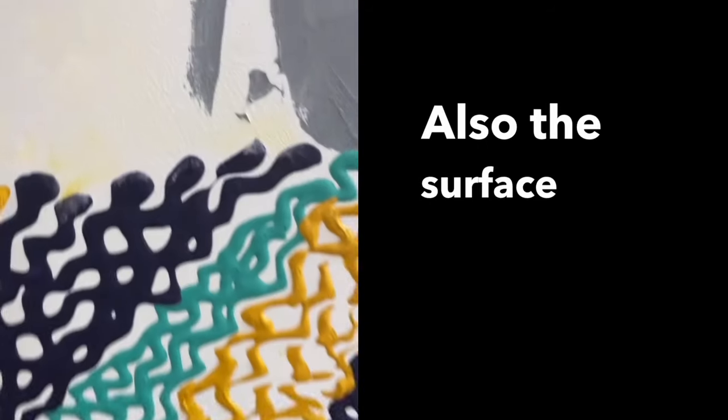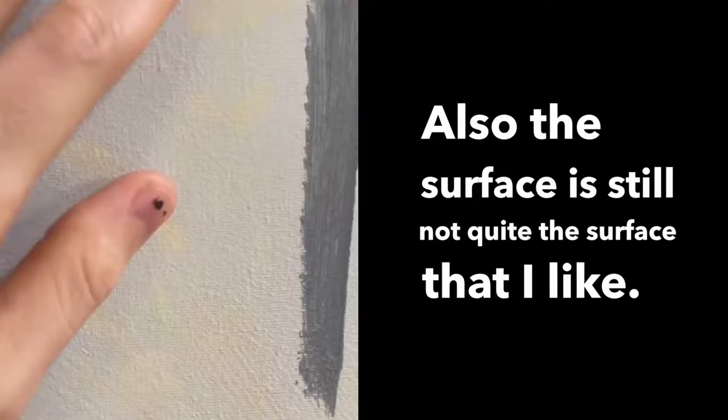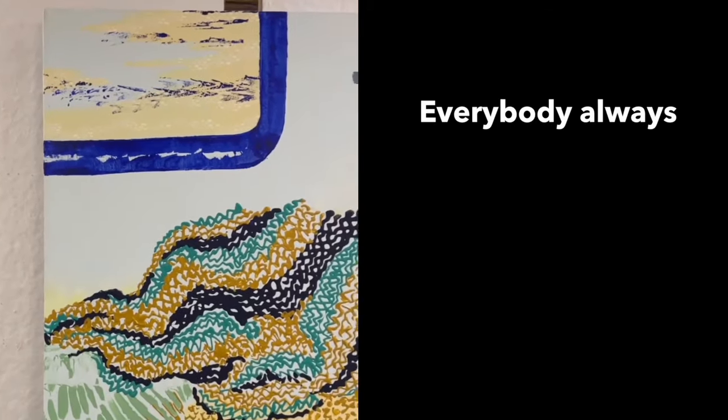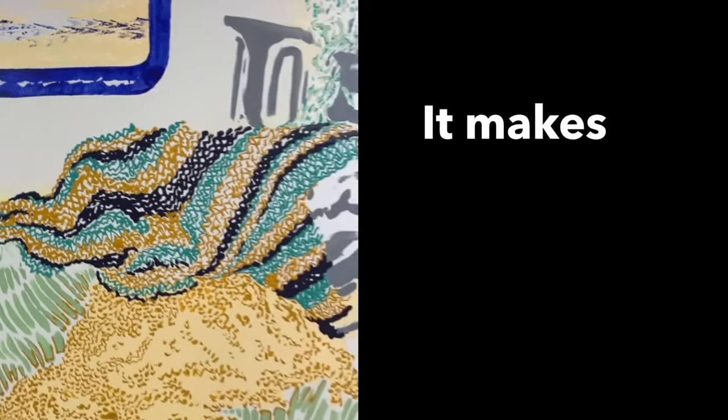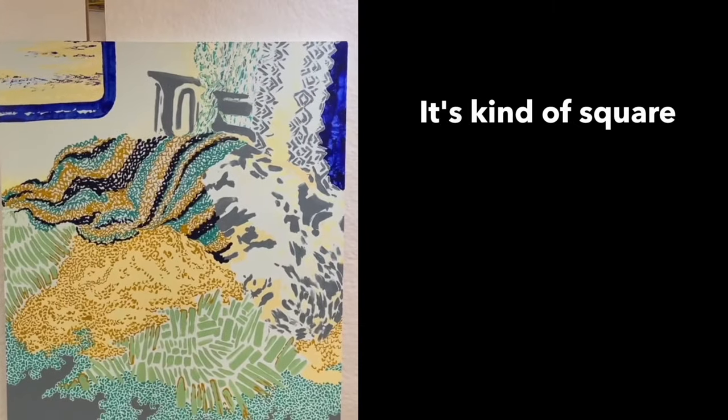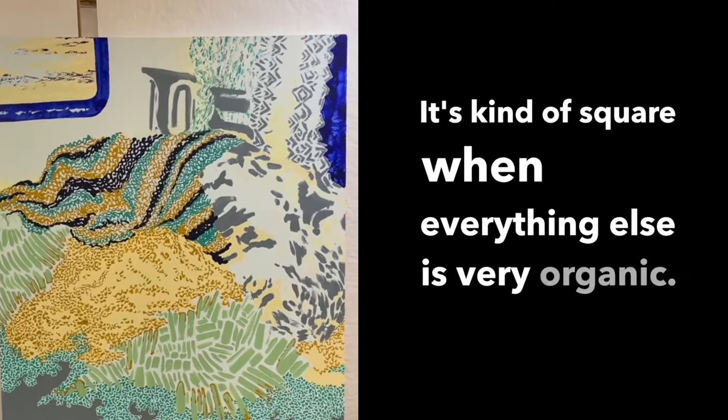Also the surface is still not quite the surface that I would like. I consider this rather rough. And also I have this TV here. Nobody knows what this is. Everybody always asks me about it. It was part of a TV. It makes no sense in the rest of this painting.